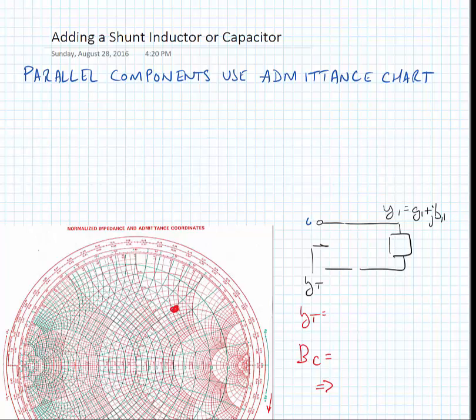We can find our reflection coefficient for the admittance chart similarly to how we did the impedance. Gamma is equal to y minus y sub zero over y plus y sub zero, where y sub zero is the characteristic admittance. We can normalize this, and we find that gamma equals little y minus 1 over little y plus 1 if it's normalized.